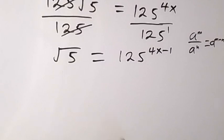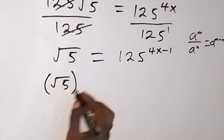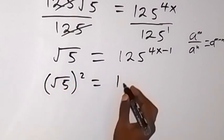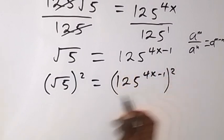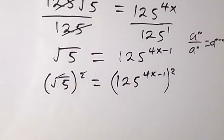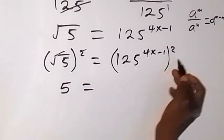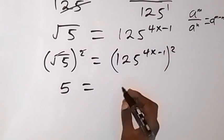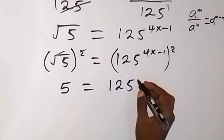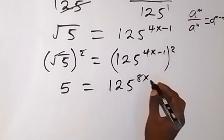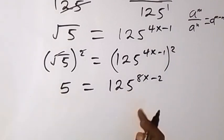From here, let's square both sides again to remove the square root. So root 5 squared equals 125 raised to power (4x minus 1), all squared. The square cancels the square root on the left, leaving just 5. On the right, we open the power of 2 and write it as 125 raised to power 2 times 4x, which is 8x, then minus 2.